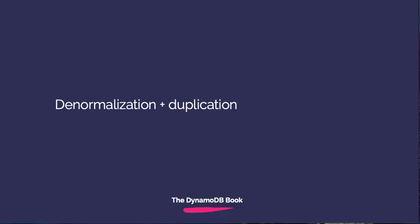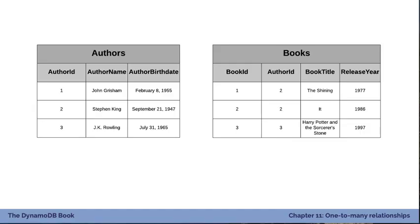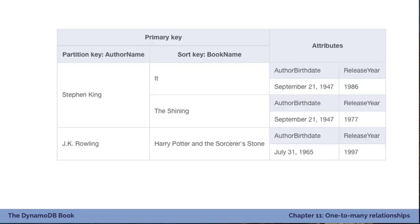The second strategy is denormalization plus duplication. Imagine you have books and authors. In a relational database, you'd split these into two tables and join across them, but we don't have joins in DynamoDB, so we make do with something else.